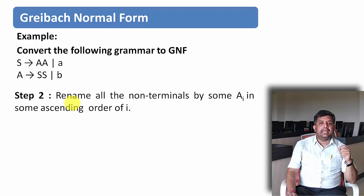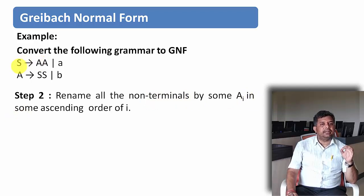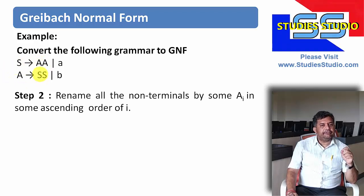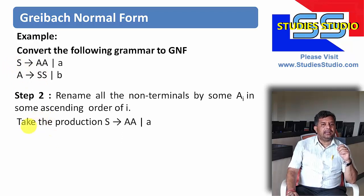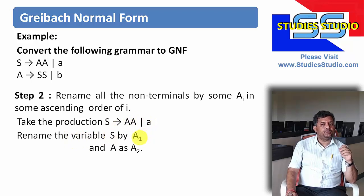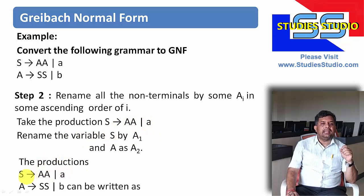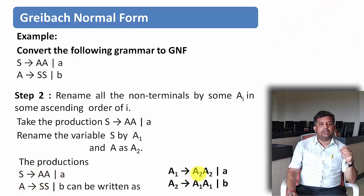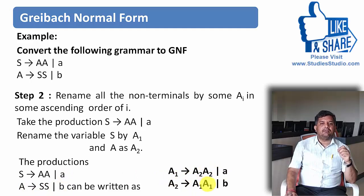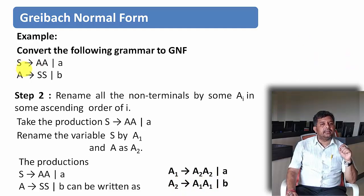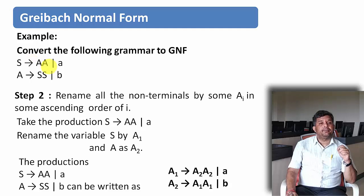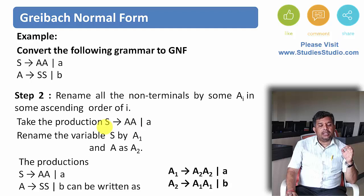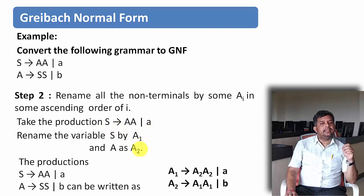We go directly to step 2: renaming non-terminal symbols as Ai in ascending order of i. In this grammar we have two variables, S and A. Taking the first production, we rename S as A1 and A as A2. Then the productions S derives AA or A, and A derives SS or B, become: A1 derives A2A2 or A, and A2 derives A1A1 or B. Remember, you must name variables in the order they appear in the productions, not arbitrarily.